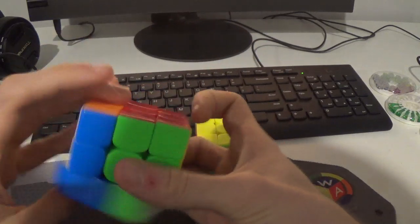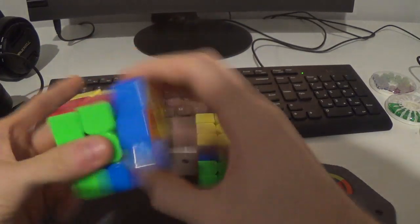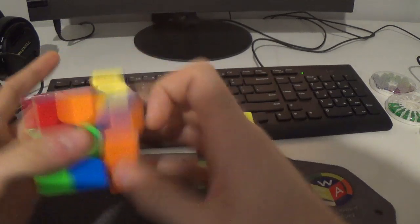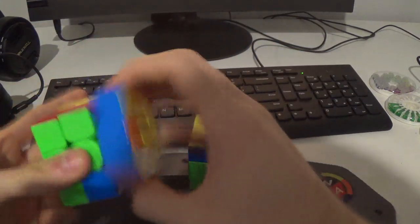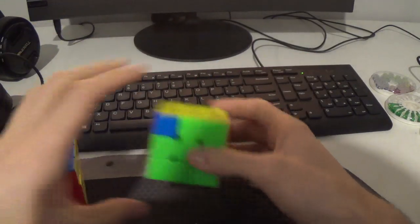So here instead of trying to do a slow A-perm like that, or trying to do U, A-perm U-prime, which looked like, wrong case, whatever, which was like this. What I would do instead is just rotate and do that.